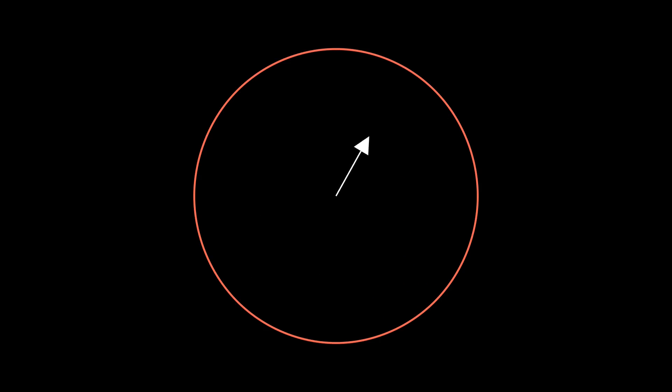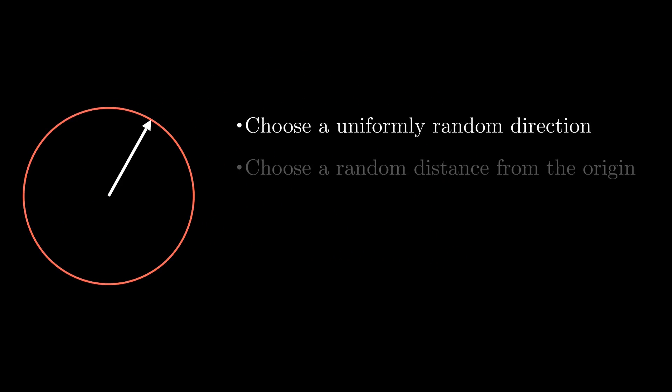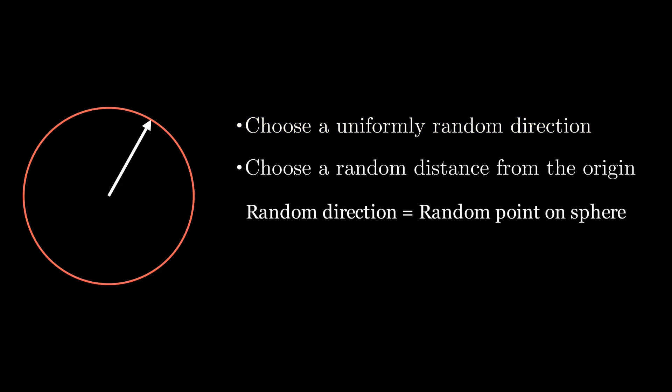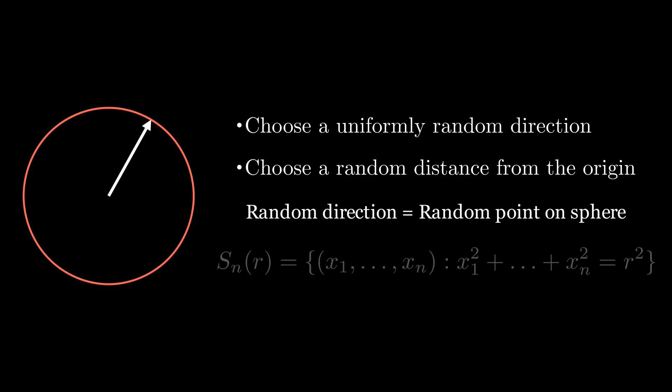Instead, we take a similar approach: first choose a direction uniformly at random, then choose a random number between 0 and 1 to be the distance from the origin. Choosing a random direction in n-dimensional space is the same as choosing a random point on the n-dimensional unit sphere. A sphere is the boundary of a ball, and points on the unit sphere satisfy x1 squared plus x2 squared, all the way to xn squared, equals 1. Our task is divided into two parts: choosing a random point on the unit sphere, and choosing a distance from the origin.